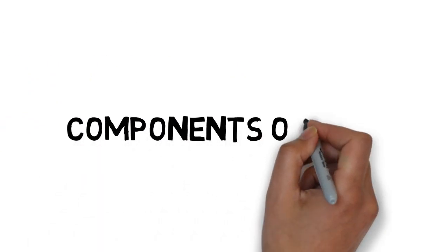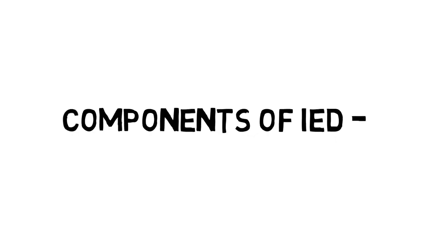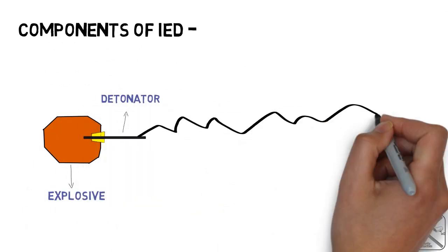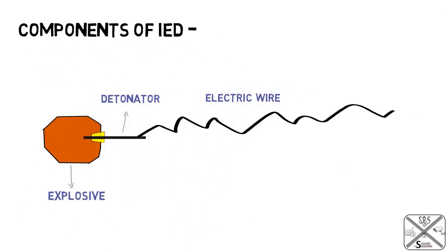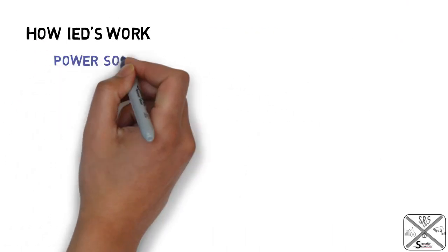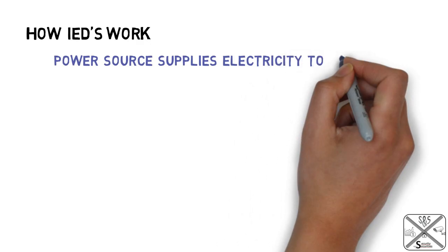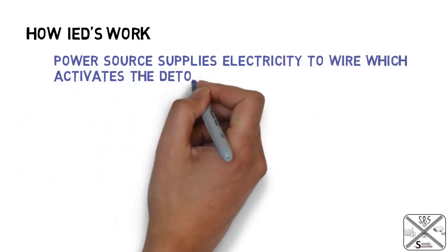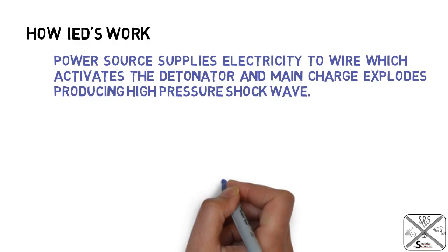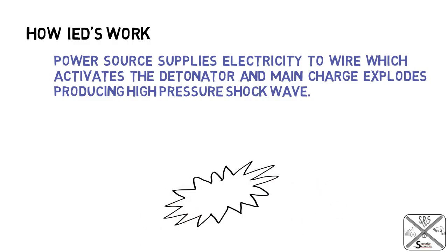The components of an IED are: explosive, detonator, electric wire, and power source. How IEDs work: the power source supplies electricity to the wire, which activates the detonator, and the main charge explodes producing high pressure shock waves.